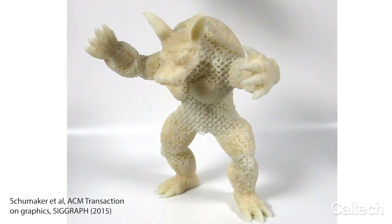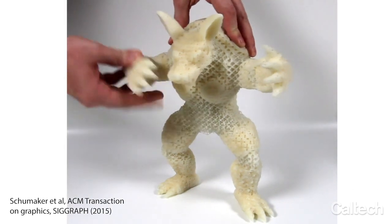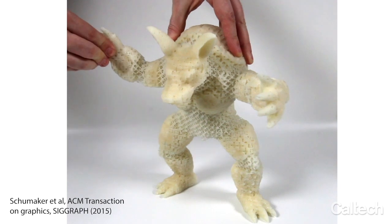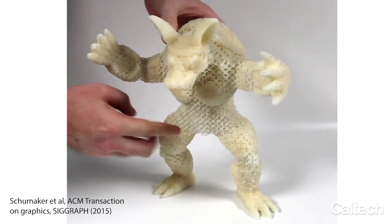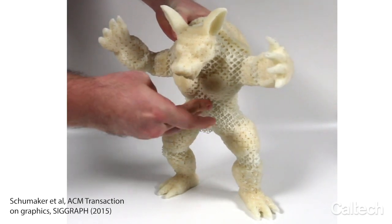In this example, I'm showing an armadillo, 3D printed with a single polymeric material, which has different properties in different parts of its body, like a hard shell, articulated joints, and flexible limbs.